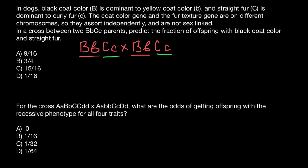Because we are diploid, we have two different variants — which we call alleles — for gene B, and two alleles for gene C. So in order to solve this problem, all we have to do is build a simple Punnett square. The genotype for gene B of parent one is capital B and small b, and the genotype of parent two for the same trait specifying coat color is the same.